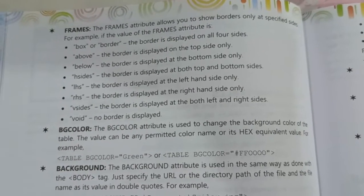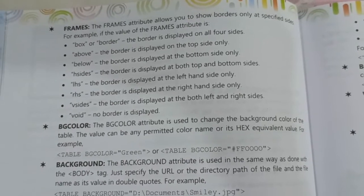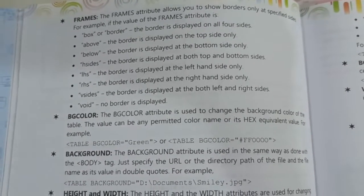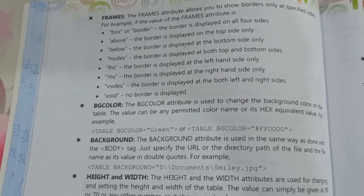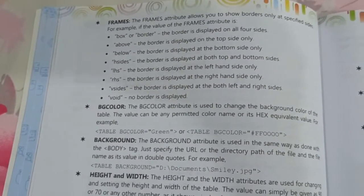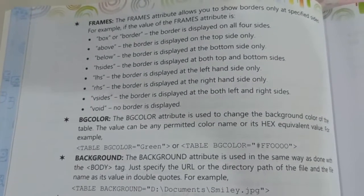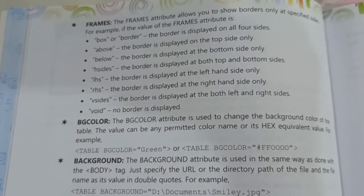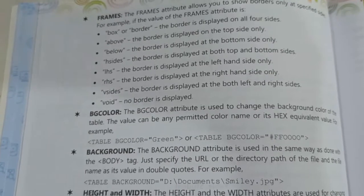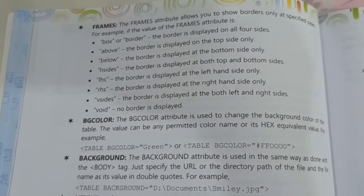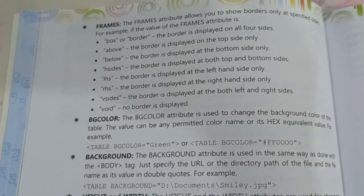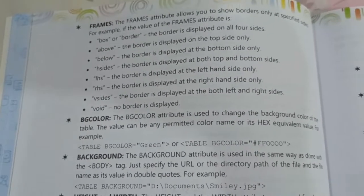The next attribute is Frames. The frames attribute allows you to show borders only on specified sides. Here are the values for the frames attribute. The first is 'box' or 'border' — this means the border is displayed on all four sides: top, bottom, left, and right.